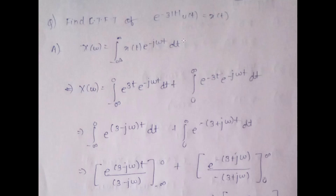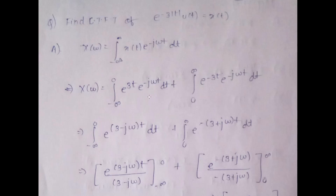We need to find X(ω), the Continuous Time Fourier Transform, given as X(ω) = integral from minus infinity to infinity of x(t) e^(−jωt) dt. In place of x(t), we substitute e^(−3|t|)u(t). Splitting the integral: from minus infinity to 0, |t| becomes −t, giving e^(3t) e^(−jωt) dt; plus from 0 to infinity, |t| = t, giving e^(−3t) e^(−jωt) dt.